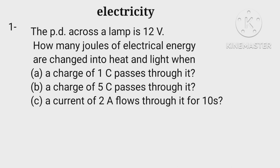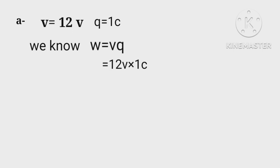Read the question carefully first. Moving on to part A of question. Given as V equals 12 volt, Q equals 1 coulomb. We know W equals VQ equals 12 volt times 1 coulomb equals 12 joules.